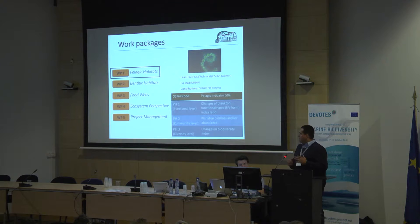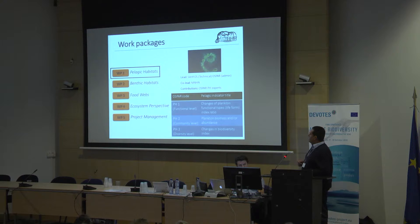The work packages are here; we are talking about pelagic habitats, and essentially three indicators. First of all, PH1 on functional levels — changes of plankton functional types; PH2 at community level — biomass and abundance; and PH3, devoted to diversity levels and changes in biodiversity index.